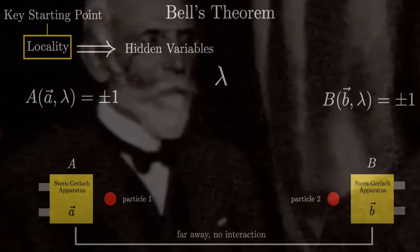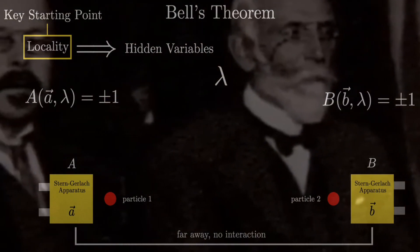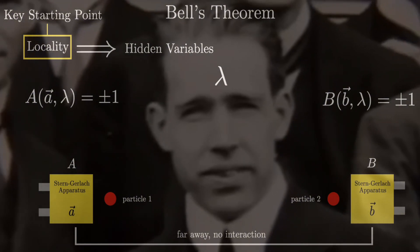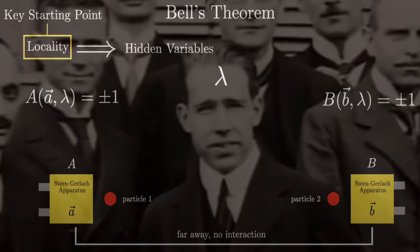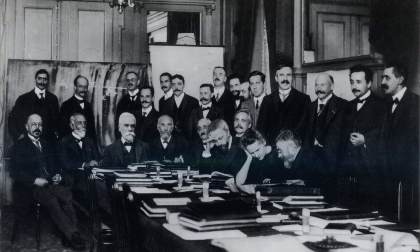Bell laid out the rules, crafting a testable inequality that could determine if quantum entanglement was a mathematical illusion or a mind-bending truth. The scientific community had its turning point, and the race to test these ideas began.